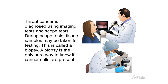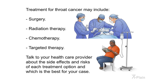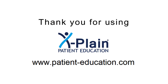Throat cancer is diagnosed using imaging tests and scope tests. During scope tests, tissue samples may be taken for testing — this is called a biopsy, and it is the only sure way to know if cancer cells are present. Treatment for throat cancer may include surgery, radiation therapy, chemotherapy, and targeted therapy. Talk to your health care provider about the side effects and risks of each treatment option and which is best for your case. Thank you for using Explain.